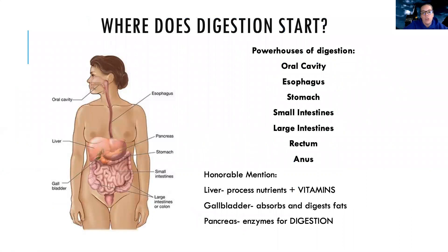There's the long tube that goes to your stomach, also known as your esophagus. Then your stomach, then small intestines which help to digest, large intestines which help with digestion and really moving things along. And then you have your rectum and anus, which help to get the stuff that you're done digesting and processing out.